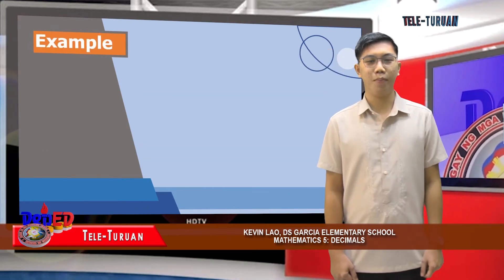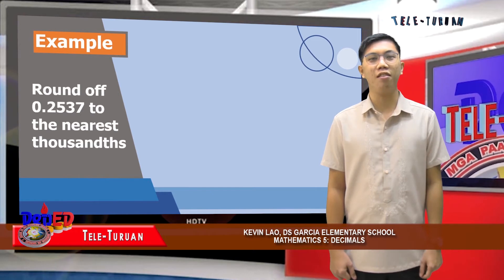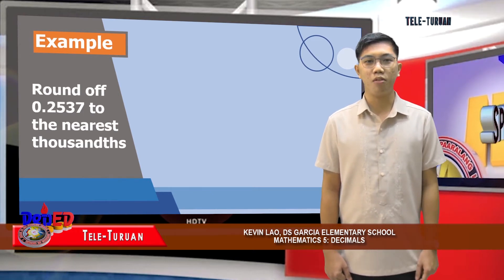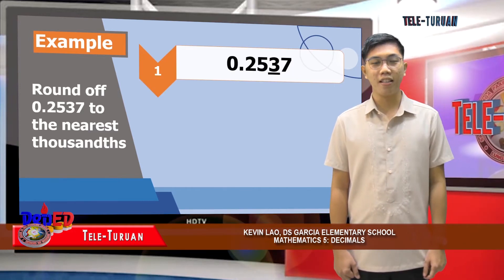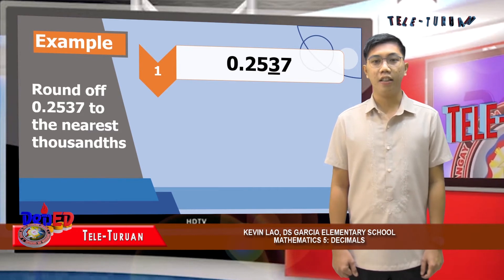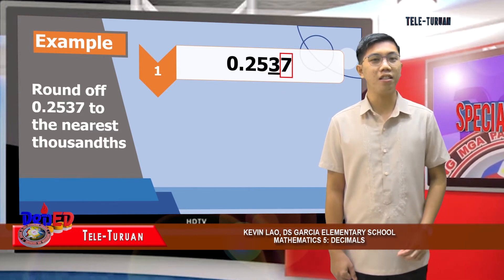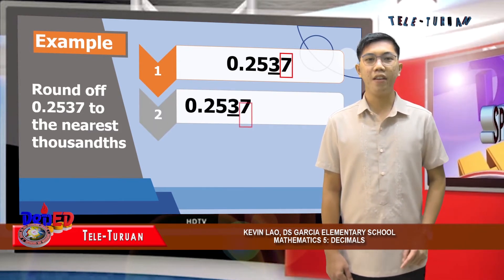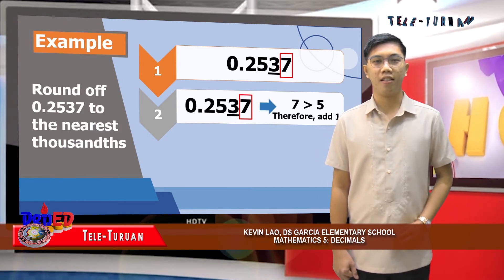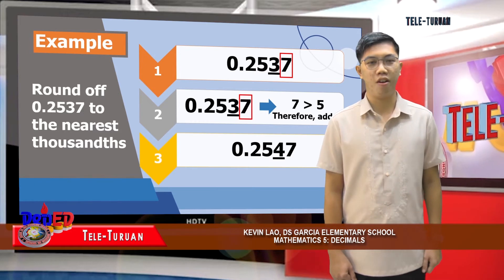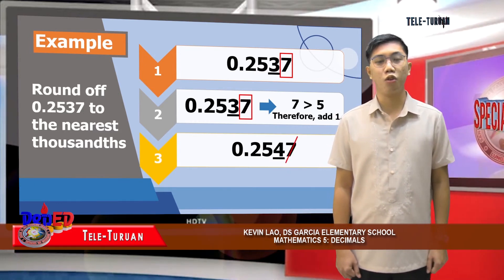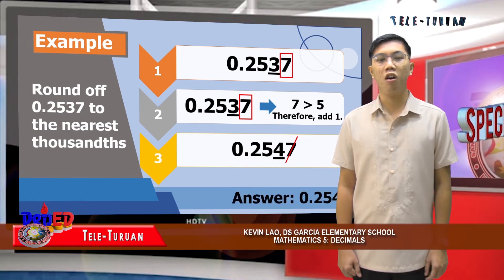Another example. Round two thousand five hundred thirty-seven ten-thousandths to the nearest thousandths. The rounding place is thousandths, so we have three. The digit to the right of three is seven. Seven is greater than five. Therefore, we add one to the rounding place — three will become four. Drop all the digits after the rounding place. The answer is two hundred fifty-four thousandths.